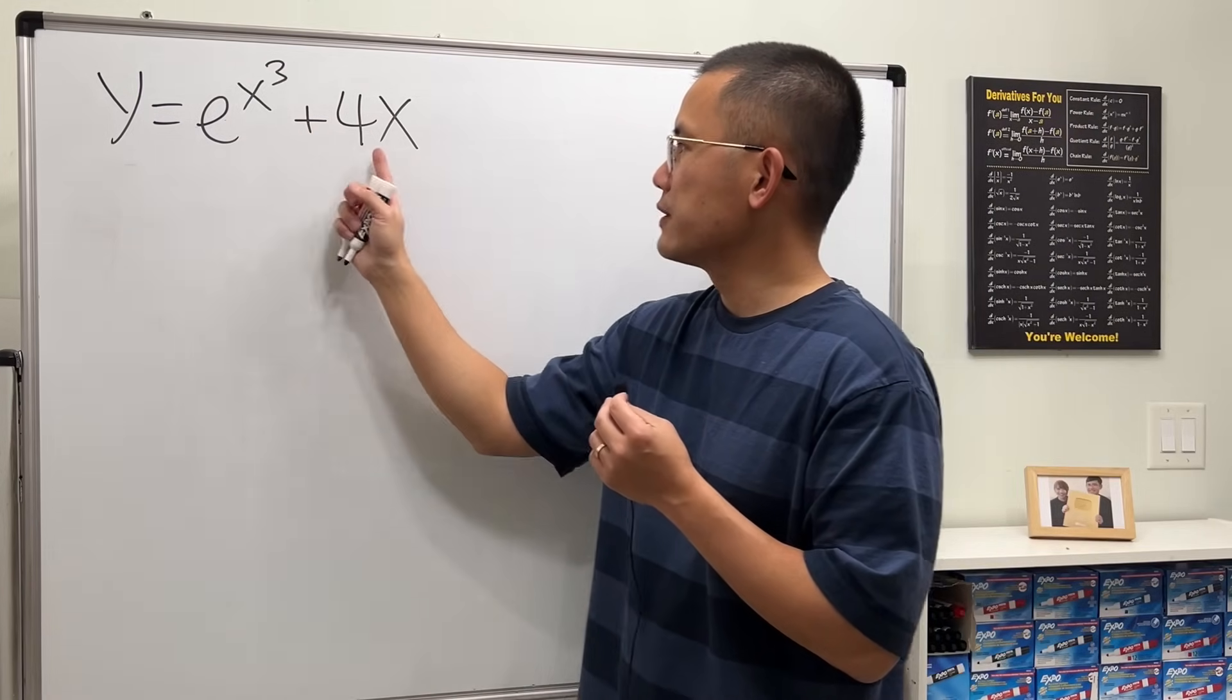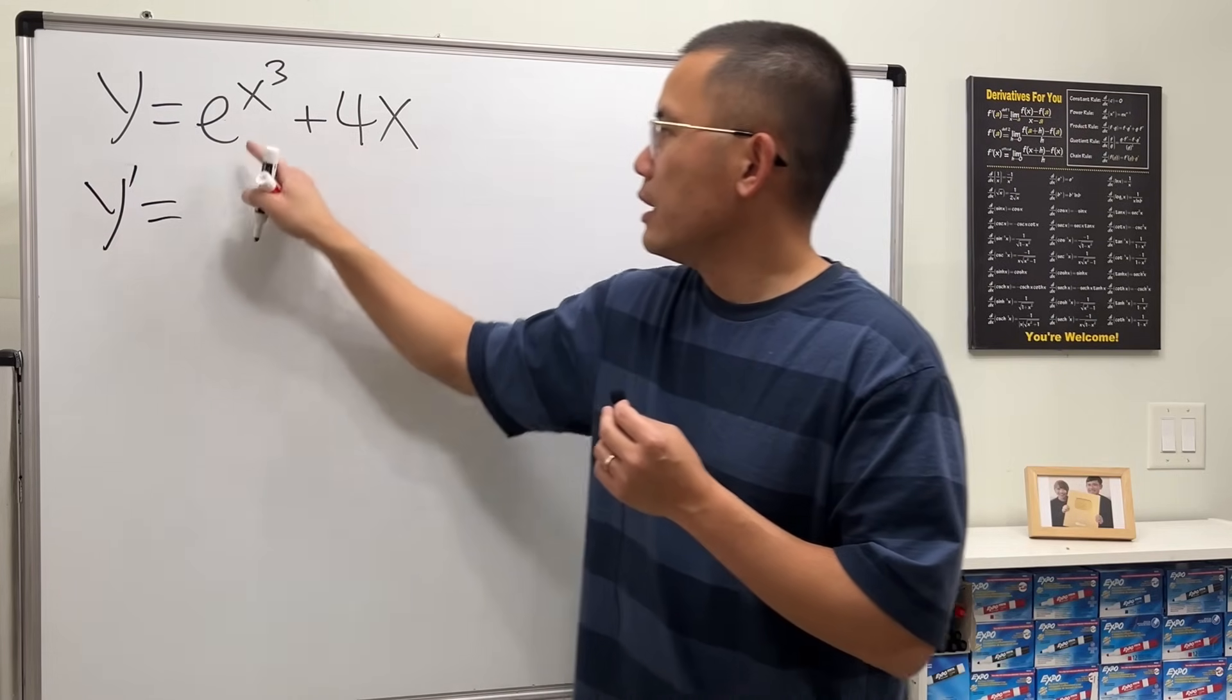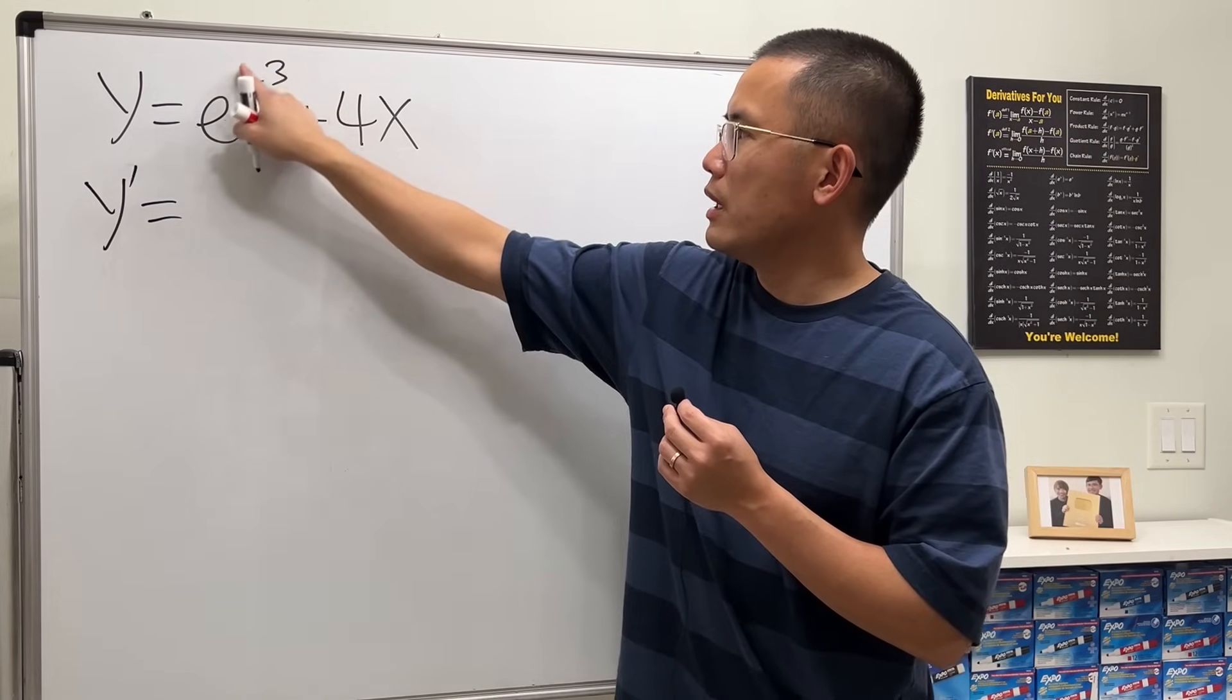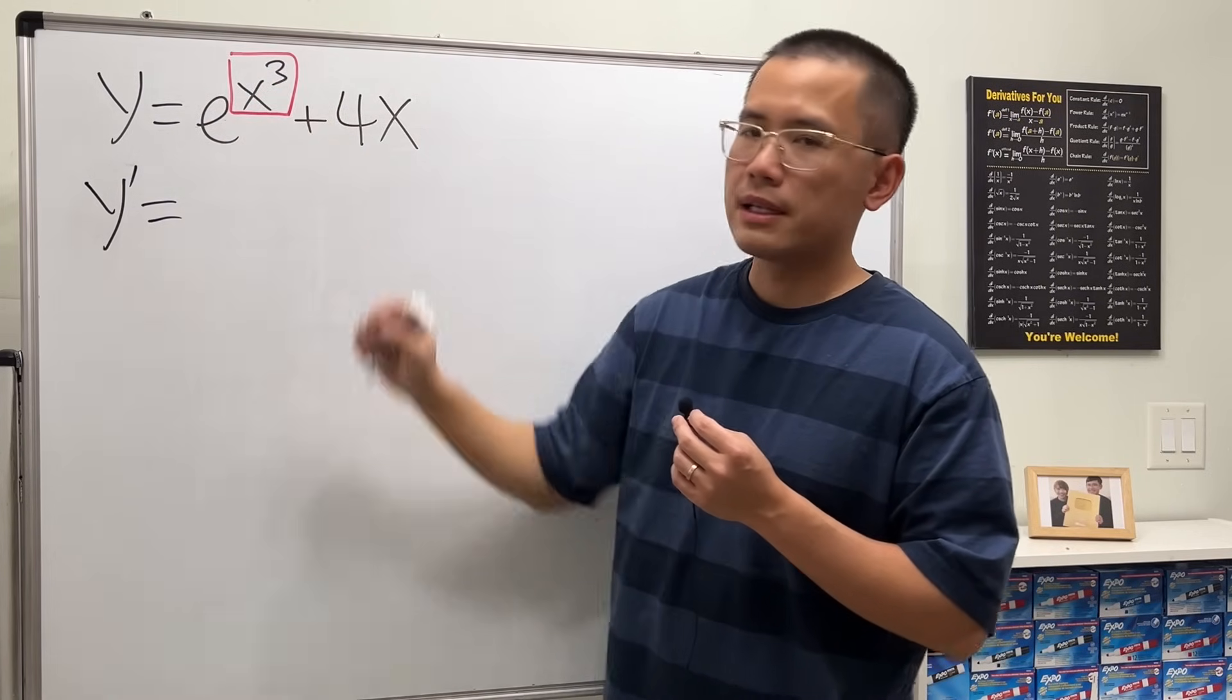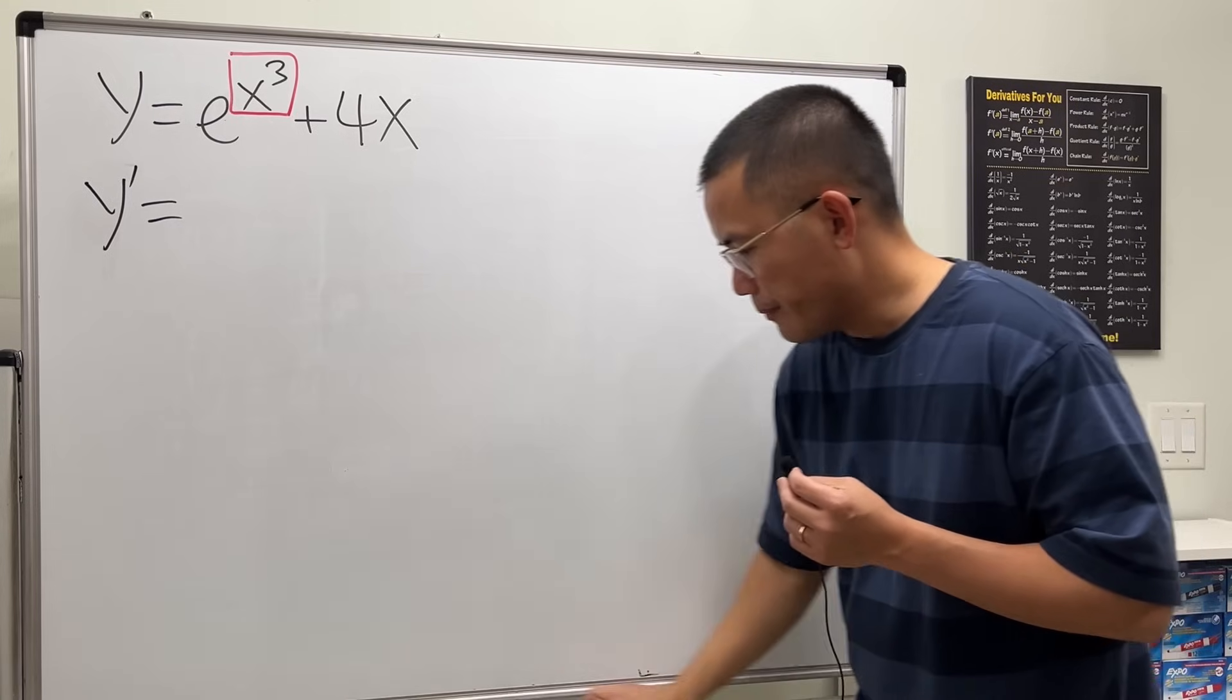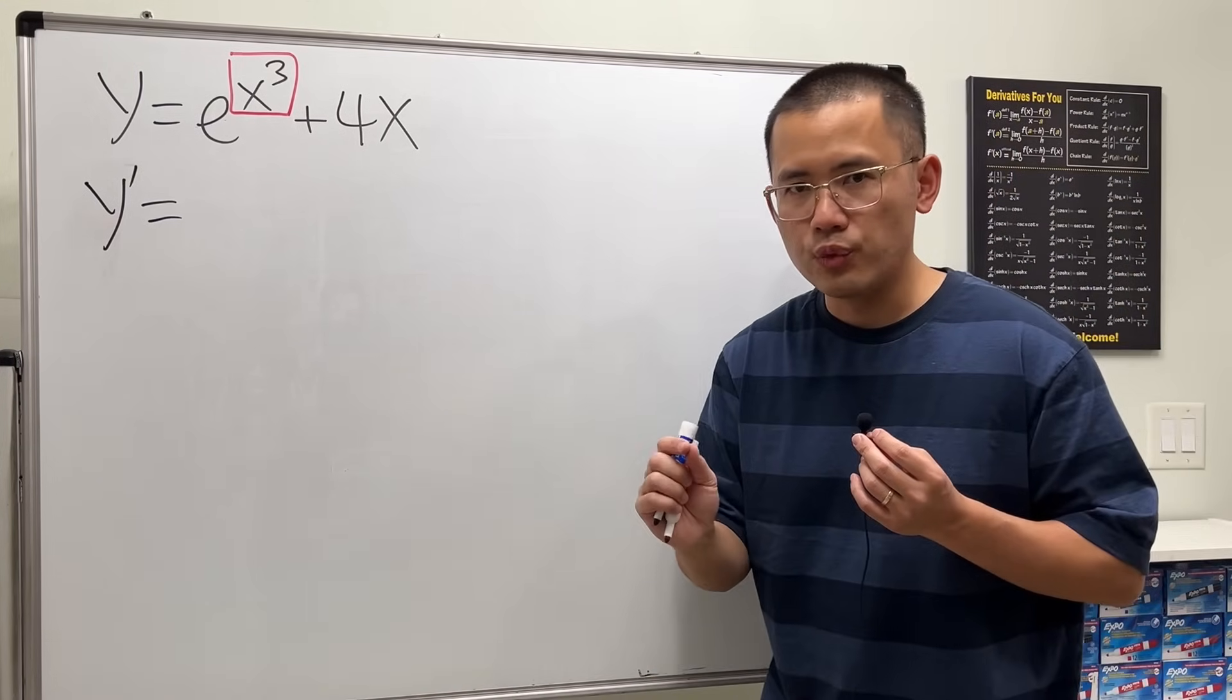to the x³ plus 4x. So first derivative y' - notice here we have e to the x³ power. You can look at this as like a box, right? e to a box power. Here's the idea, and I do have a separate video going over the chain rule. You definitely